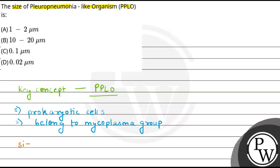Now, if we talk about size — how much size is it? That is around 0.1 micrometer. And this is free living, with a simple structure, meaning simple prokaryotic cells. So what is our correct option here? Option C — that is 0.1 micrometer.